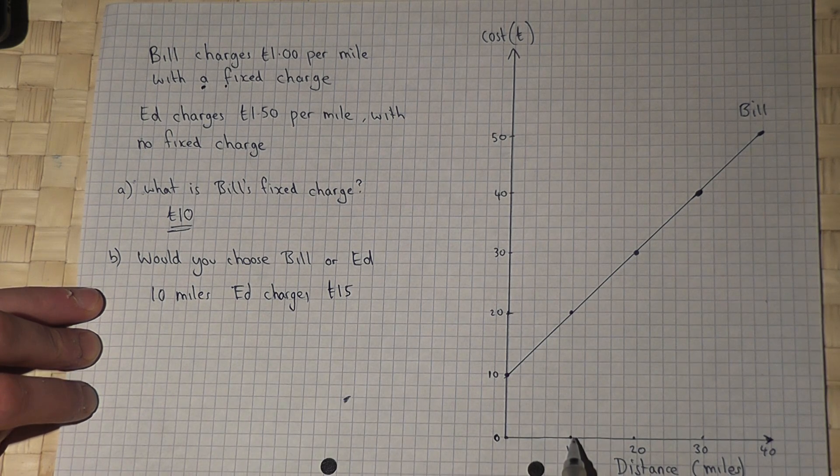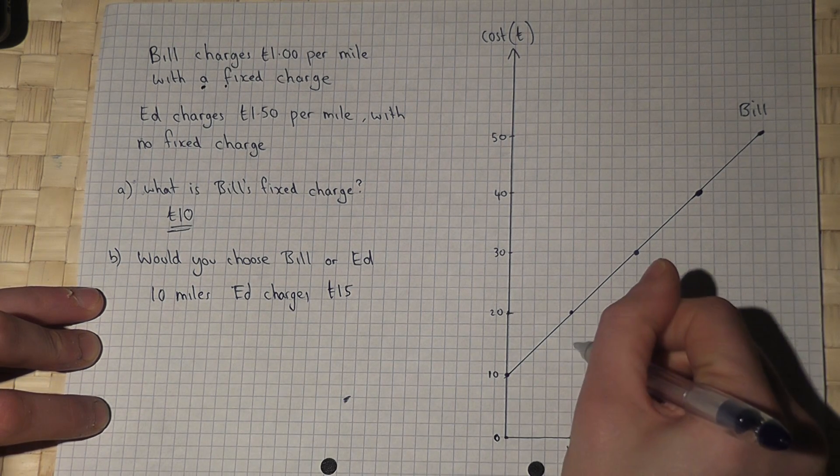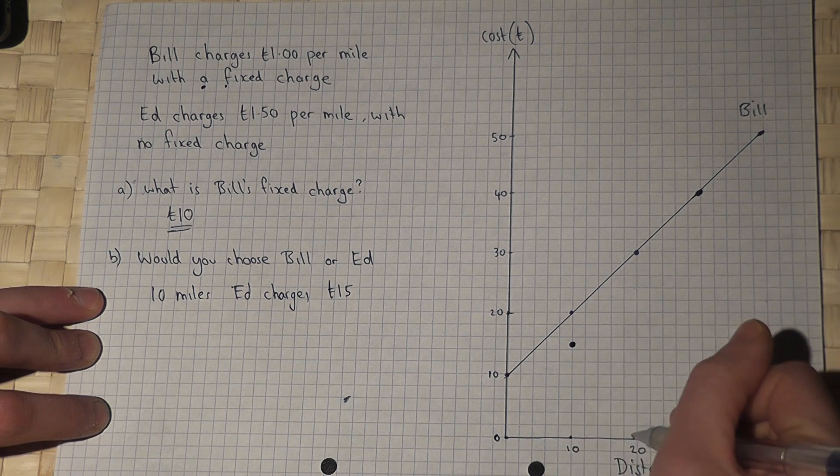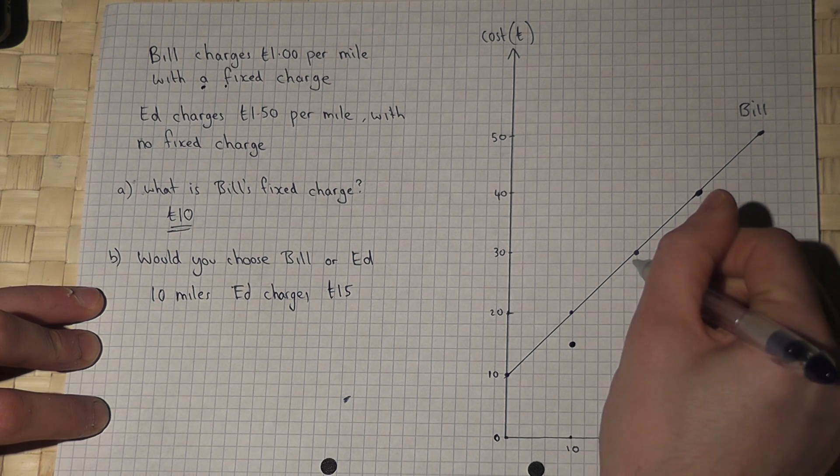So every 10 miles, you pay £15. 10 miles will be £15, so 20 will be £30.